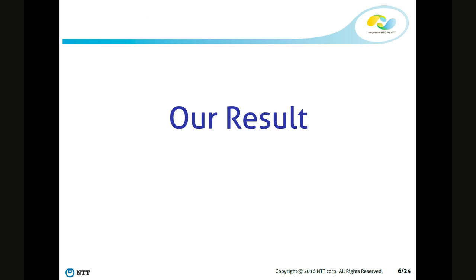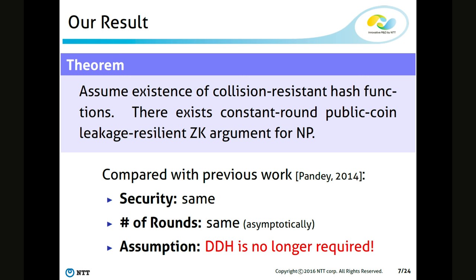The goal of this work is to construct a leakage resilient zero knowledge protocol by assuming only the existence of a collision-resistant hash function. In this work, I prove the following theorem: assuming the existence of a collision-resistant hash function, there exists a constant-round public-coin leakage resilient zero knowledge argument for any language in NP. Compared with previous work, this work achieves the same security and the same round complexity, while using a weaker assumption — only the collision-resistant hash function. The DDH assumption is no longer used.